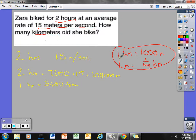I said 1 kilometer equals 1,000 meters, or 1 meter is equal to 1,000th of a kilometer. To convert this to kilometers, I'm going from meters to kilometers, so I'm going to times this by 1,000th. If I put that in my calculator, 108,000 times 0.001, Zara biked 108 kilometers in those 2 hours.